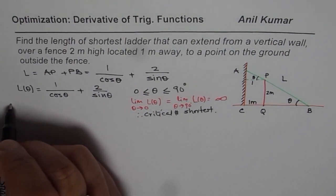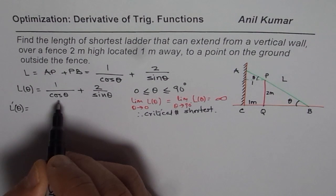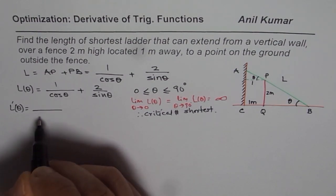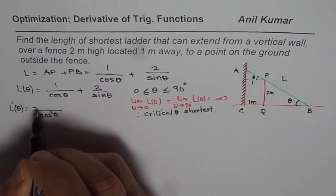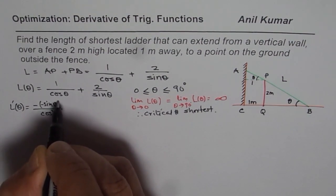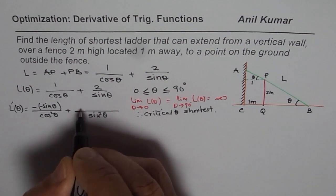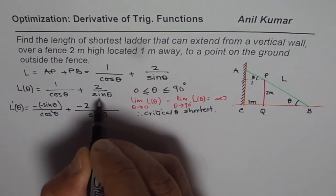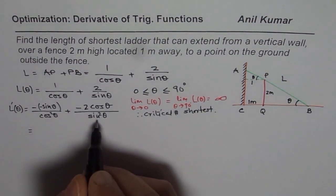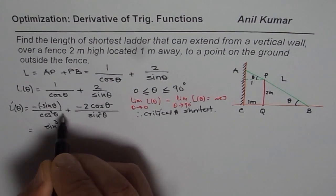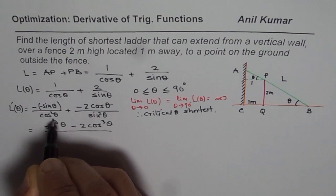To find the critical number, let's find the derivative dL/dθ. For 1/cosθ, applying the quotient rule gives: (0 − 1·(−sinθ)) / cos²θ = sinθ/cos²θ. For 2/sinθ, the derivative gives: (0 − 2·cosθ) / sin²θ = −2cosθ/sin²θ. Combining over a common denominator sin²θ·cos²θ, the numerator becomes sin³θ − 2cos³θ.